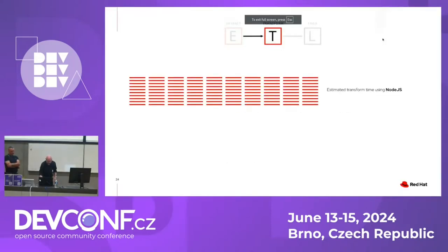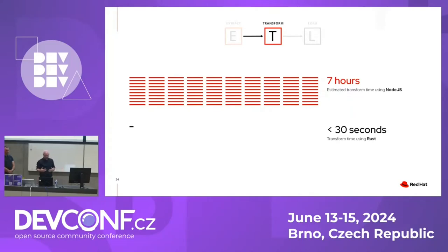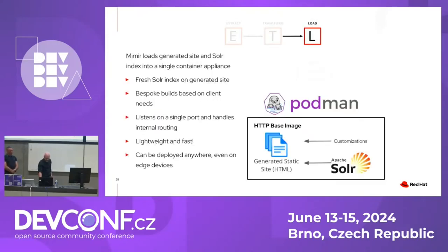Just as a comparison: if we tried to do the same kind of transform using a language like Node.js — which coming from the web world is very common — it would have taken seven hours. We did a proof of concept running our transforms with Node.js. It's single-threaded, and it would have taken an unacceptable amount of time. But with Rust it's easy.